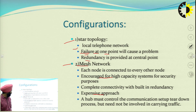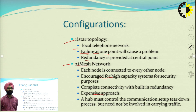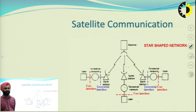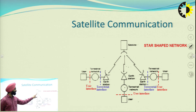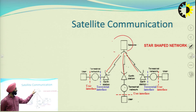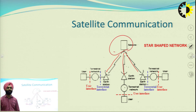The hub must control the communication setup and takedown process, but need not involve carrying traffic. For example, in GPS the networks are generally transmitting information received from the satellite to the user rather than taking any participation in any type of communication. This is an example of a star network where the satellite is communicating with all other terrestrial networks or users.